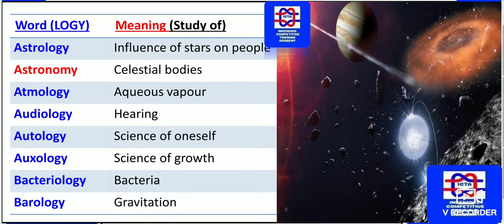Audiology concerns the study of hearing — whatever the hearing inability is, that is audiology. Autology is the science of oneself — autonomous — that is the study of oneself, or self-introspection. Auxology is the science of growth. Bacteriology is the science of bacteria.